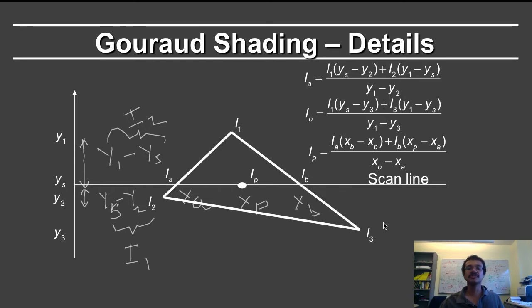So it's just interpolation first in the vertical direction, in order to get the locations for the endpoints of the scanline, and then interpolation along the scanline horizontally to get the final color of iP.